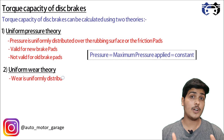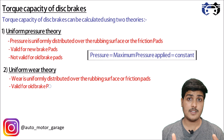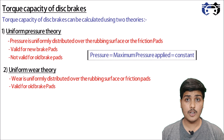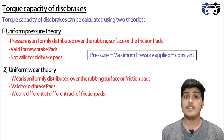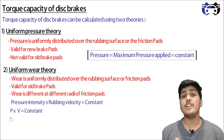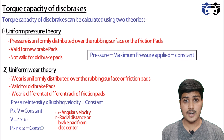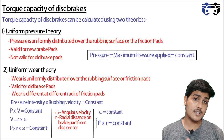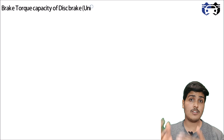According to uniform pressure theory, pressure equals the maximum pressure applied, which is constant. Number two is the uniform wear theory, which states that wear is uniformly distributed over the rubbing surface. This theory is only valid for old brake pads. As the brake pad becomes older, all sections move with different velocity, meaning wear differs at different radii. According to uniform wear theory, p multiplied by v equals constant, and since v equals r·omega, this gives p multiplied by r equals constant.